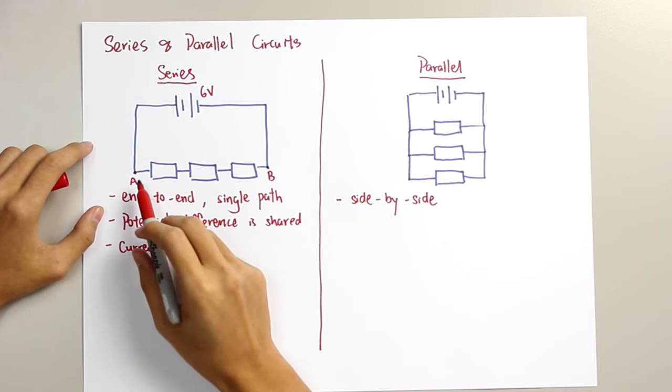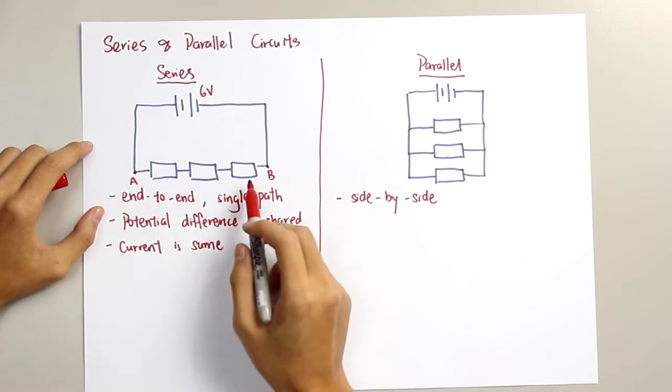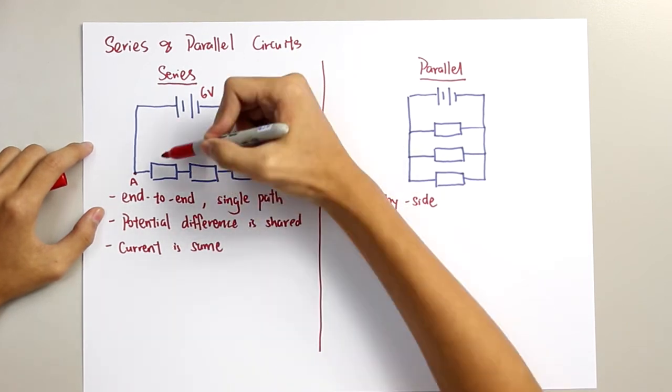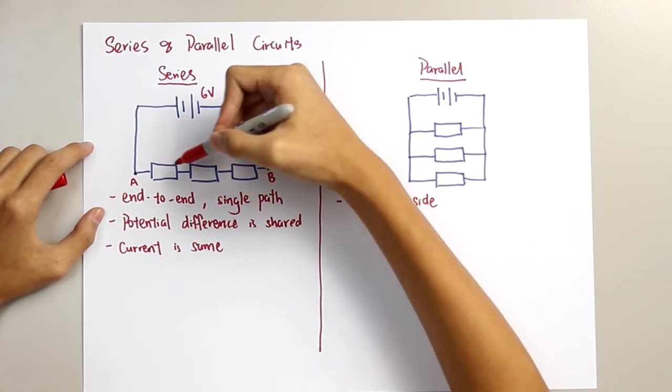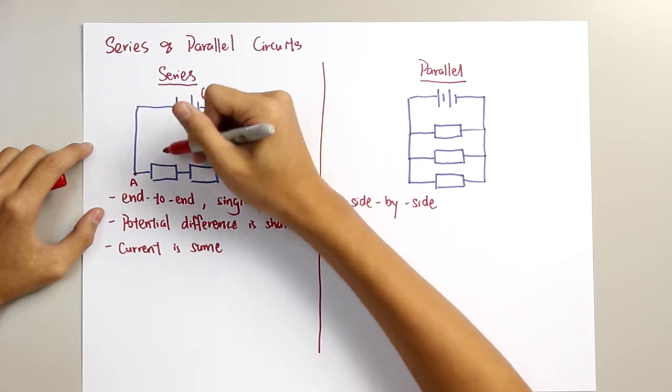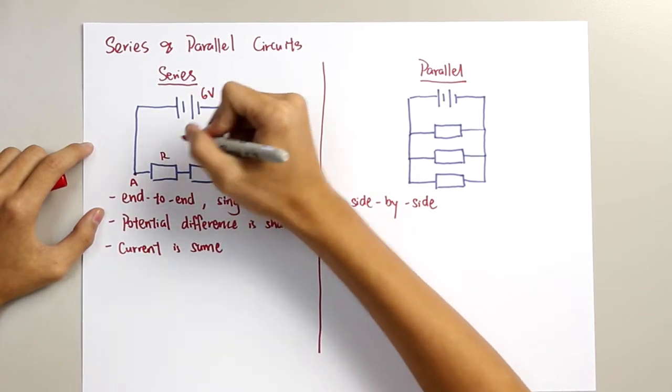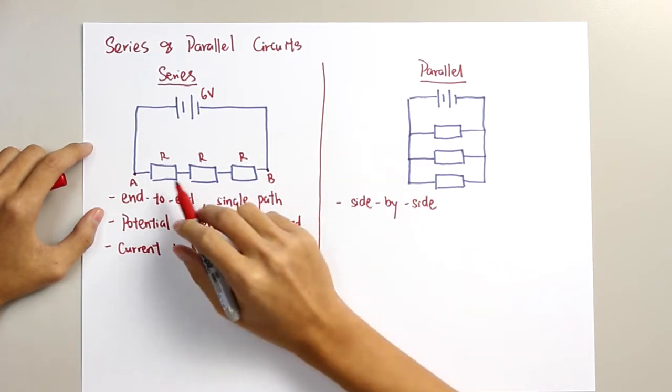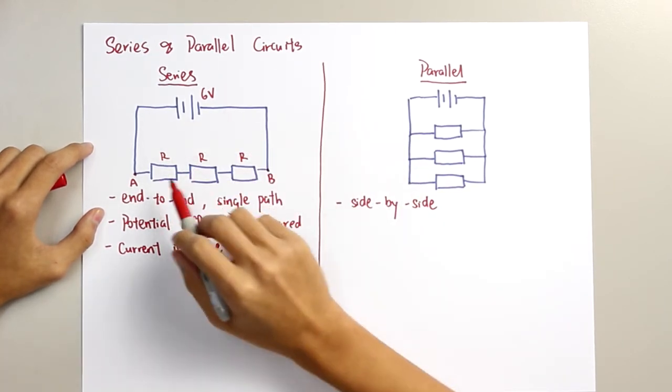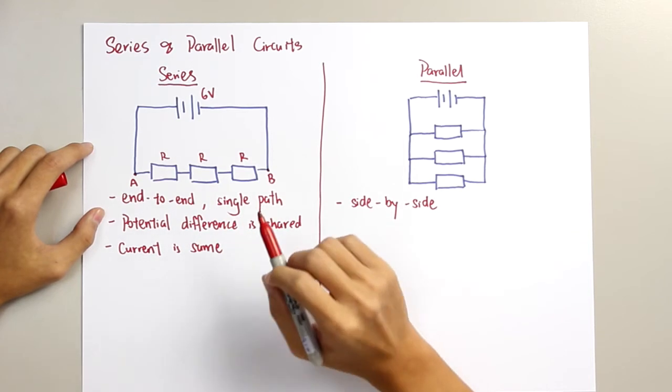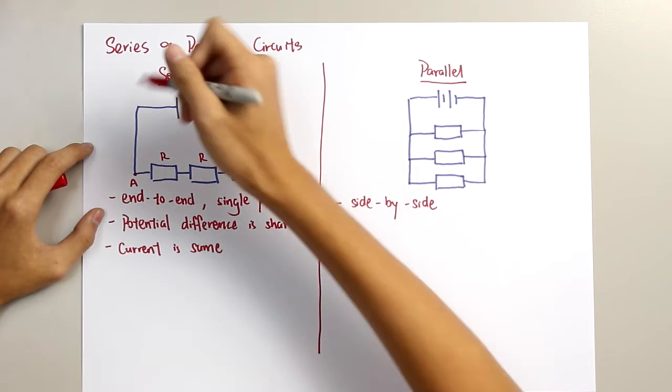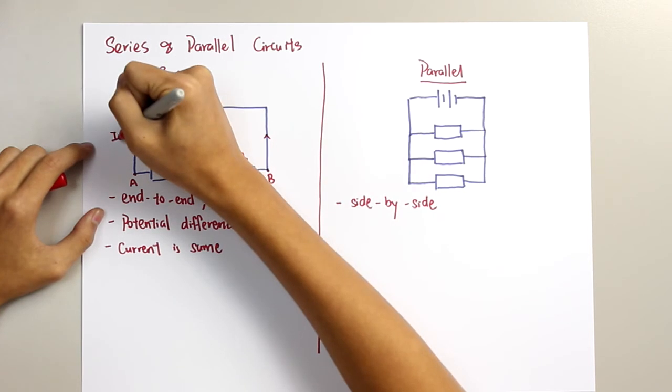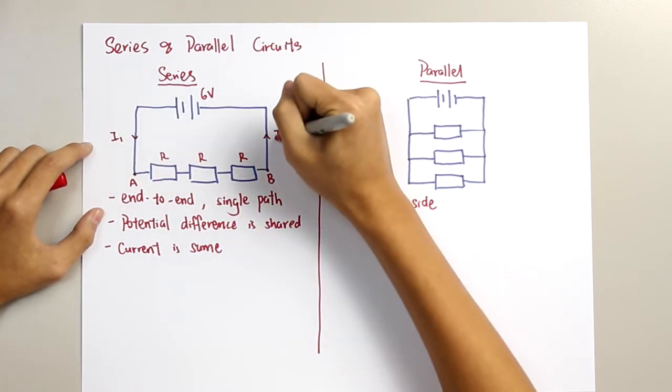And therefore, each component, they share the 6V provided by the power supply. So, each component, I assume they have the same resistance, they will receive the equal amount of 2V by each component. And therefore, the current for the whole circuit is the same.